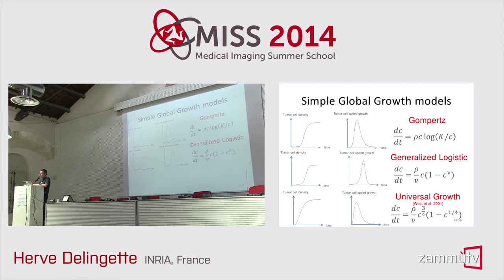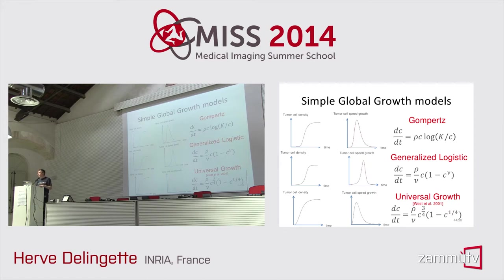There is also the generalized logistic law, which introduces a parameter nu: when nu equals 1 you get regular logistic growth, and when nu approaches zero you get the Gompertz law. There is also the universal growth law, from a 2001 Nature paper, claiming that growth of animals and organs all follow the same law independently of lifespan and scale, with exponents of three-fourths and one-fourths. This is a controversial model but has also been applied to tumor growth.